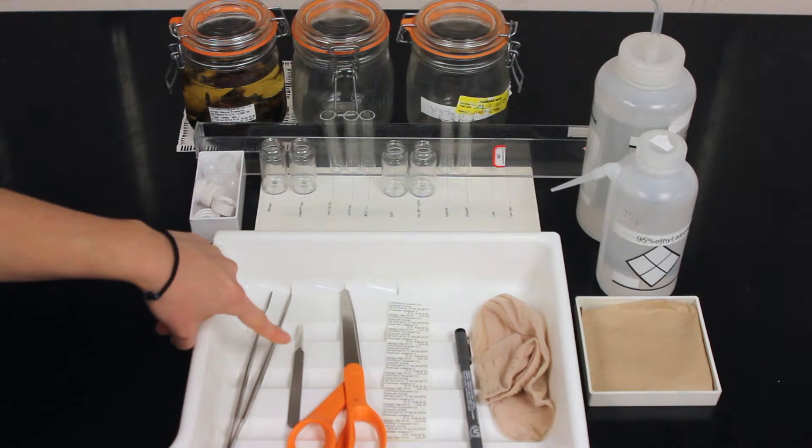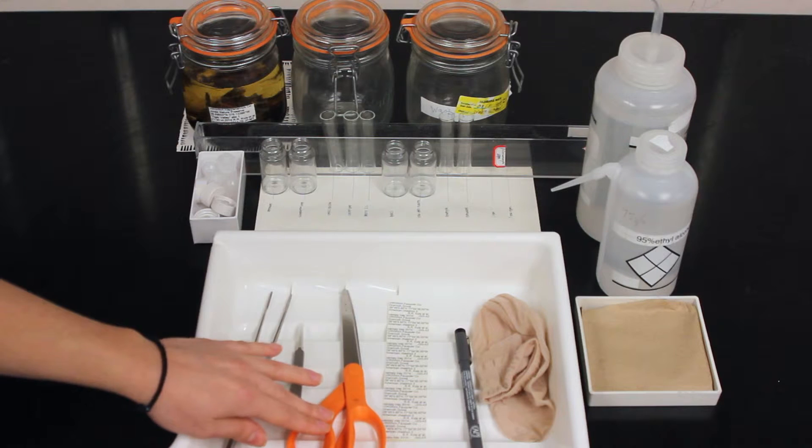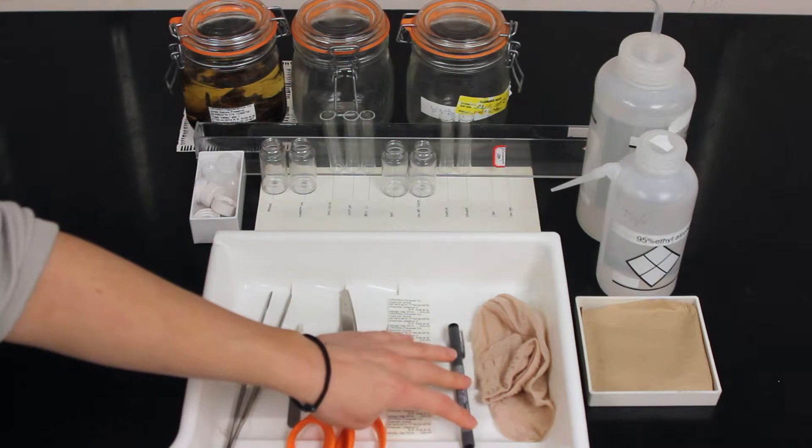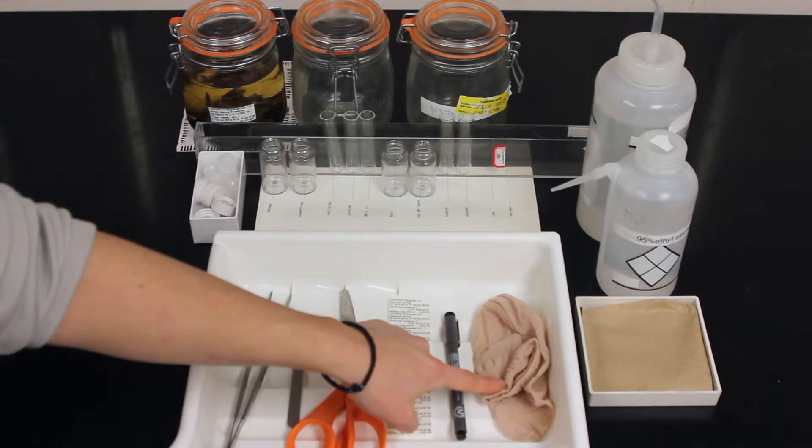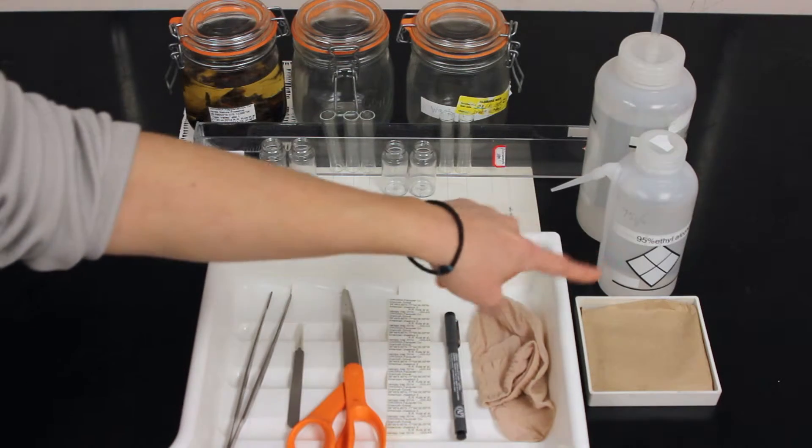A large sorting tray, large and small forceps, scissors, sample labels, black pigment pen, pantyhose, and a trash tray.